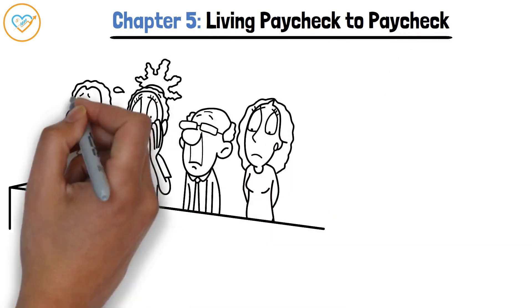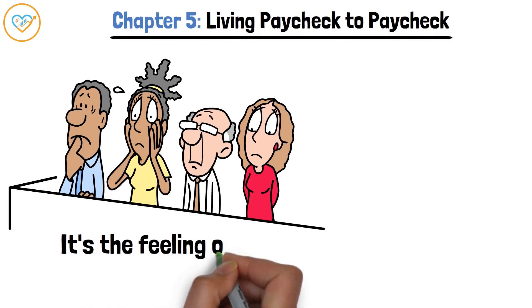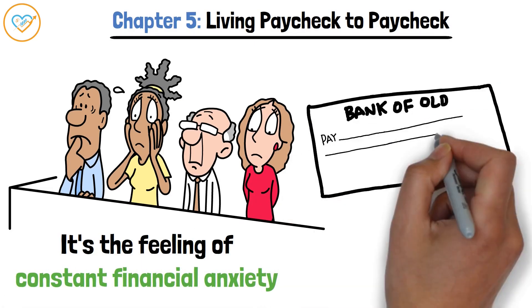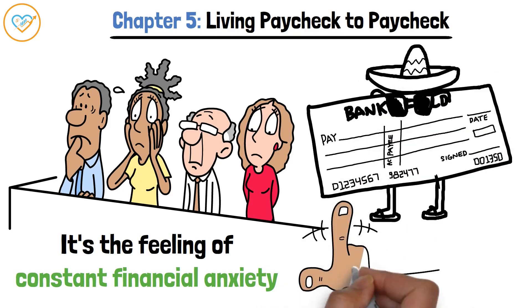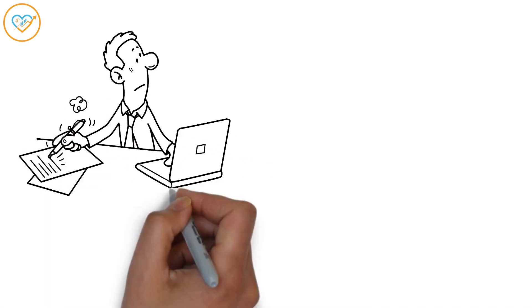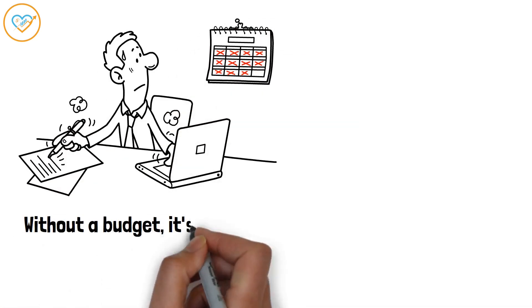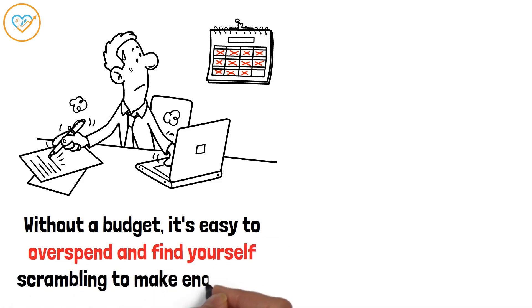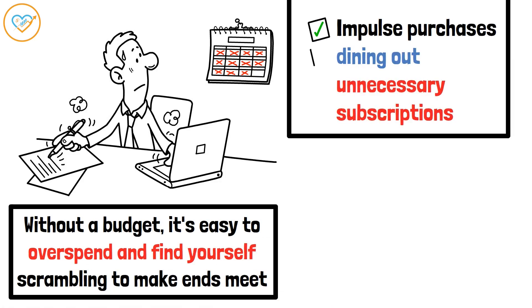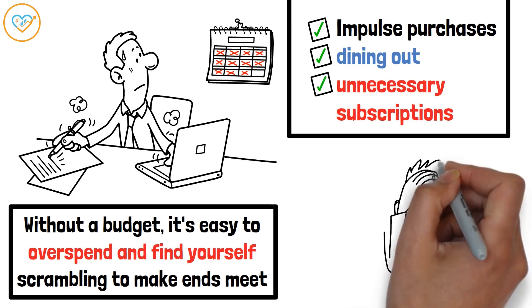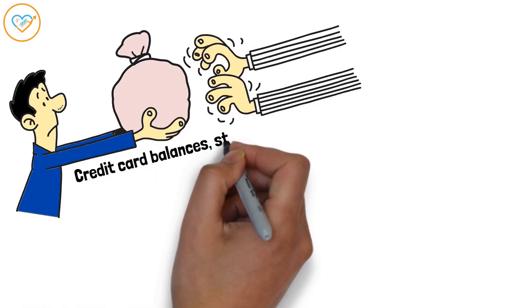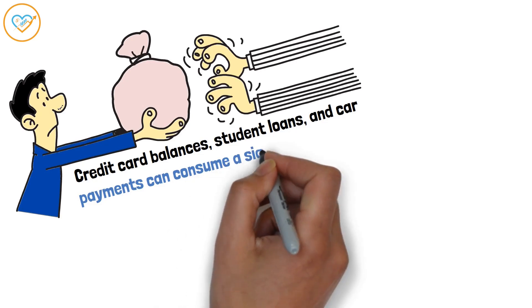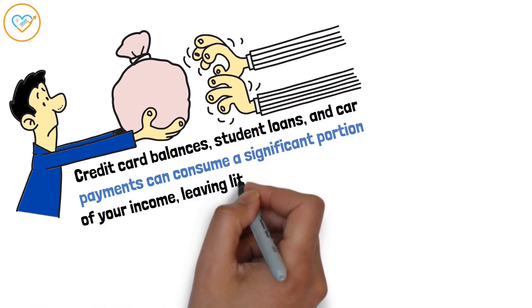Living paycheck to paycheck is a stressful cycle that traps many people. It's the feeling of constant financial anxiety, where every dollar is accounted for before it even hits your bank account. It's a never-ending treadmill that's hard to escape. This financial situation often stems from a lack of planning. Without a budget, it's easy to overspend and find yourself scrambling to make ends meet. Impulse purchases, dining out, and unnecessary subscriptions can quickly drain your account. Another culprit is carrying too much debt. Credit card balances, student loans, and car payments can consume a significant portion of your income, leaving little room for savings.